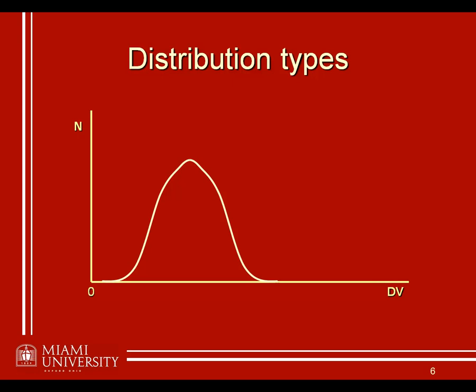The next important thing to consider is classifying different types of distributions. In particular we want to look at distributions of different shape. This is what we would call a normal distribution — also referred to as a Gaussian or bell-shaped distribution. Normal distribution is probably the most common name and the one we'll use in this course. It peaks at the center and then falls off gently to both sides at a decreasing rate — the further you get from the center, the more quickly the frequency of scores approaches zero.